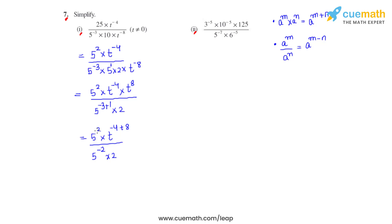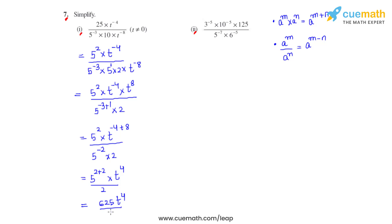That is divided by 5 raised to negative 2 times 2. We can see that 5 raised to 2 is divided by 5 raised to negative 2; the bases are the same, so we subtract the powers. We get 5 raised to 2 minus of minus 2, which becomes positive, giving us 2 plus 2 times t raised to 4, divided by 2. On addition, the power of 5 is 4, so 5 multiplied by itself 4 times gives 625. The answer for bit 1 is 625 times t raised to 4, divided by 2.